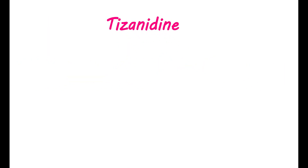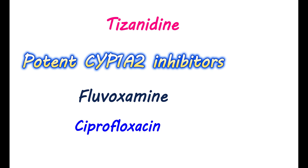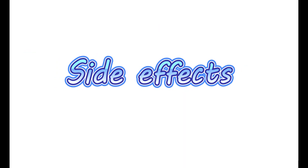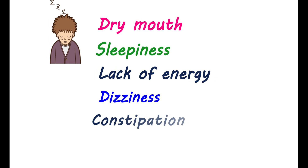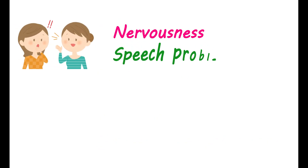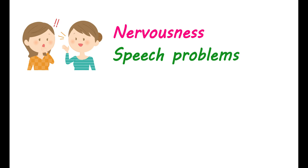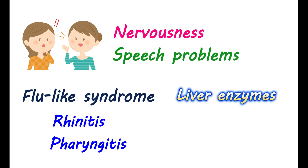Tizanidine is contraindicated with medications that increase its levels by inhibiting its metabolism — potent CYP1A2 inhibitors like fluvoxamine and ciprofloxacin are contraindicated. Common side effects include dry mouth, sleepiness, lack of energy, dizziness, and constipation. It can also cause urinary tract infection, increased urinary frequency, nervousness, speech problems, flu-like syndrome with rhinitis and pharyngitis, and elevated liver enzymes. In some people, Tizanidine can produce a condition called lazy eye, where vision in one eye is blurred.